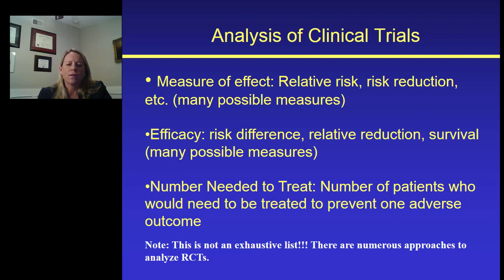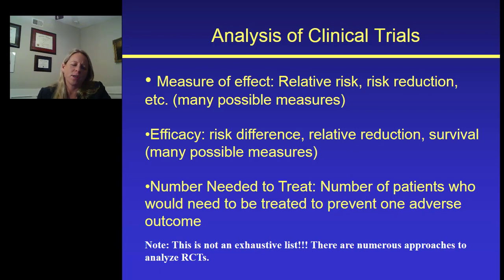Another measure that is often generated from the results of a clinical trial is called the number needed to treat. This is a quantity often used by clinicians as a means to determine or predict the number of patients who would need to be treated with a new intervention to either prevent one adverse event occurring, or it could be flipped to say how many would need to be treated to observe one positive outcome.